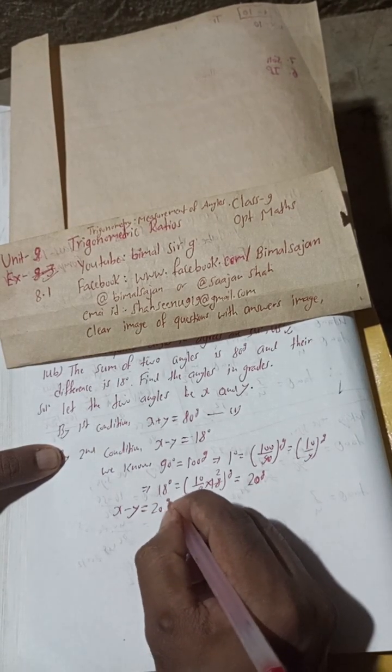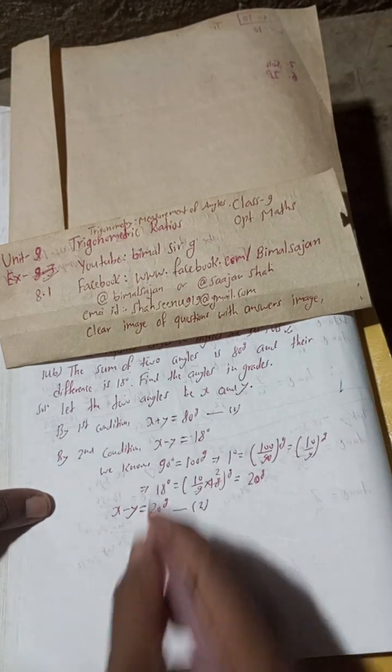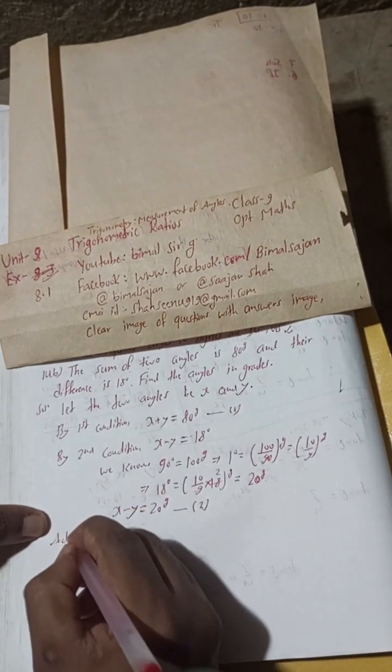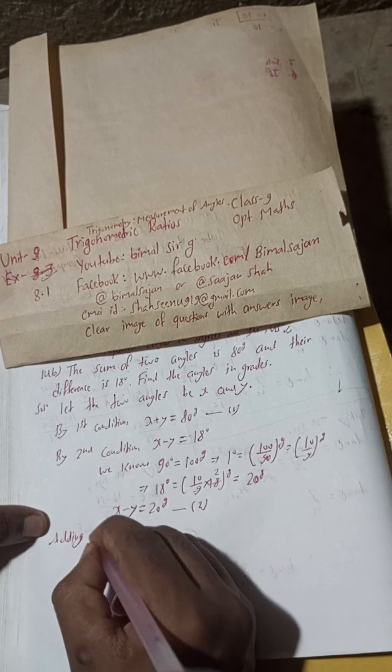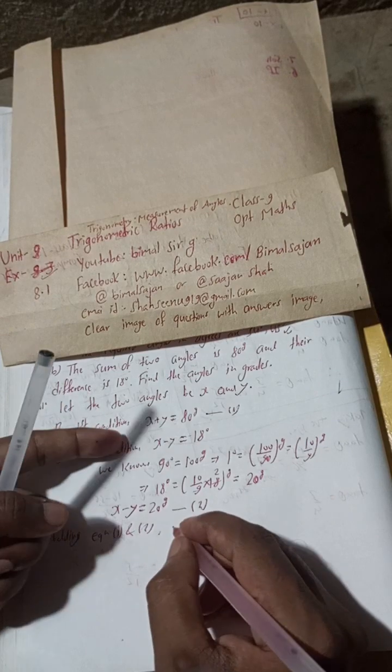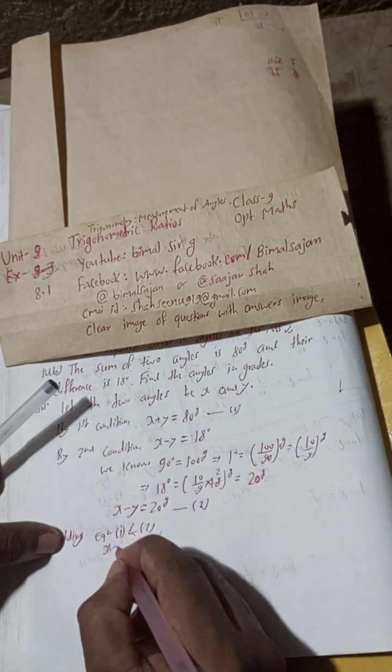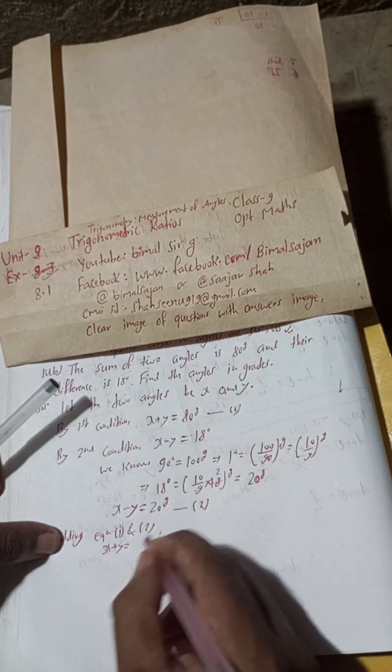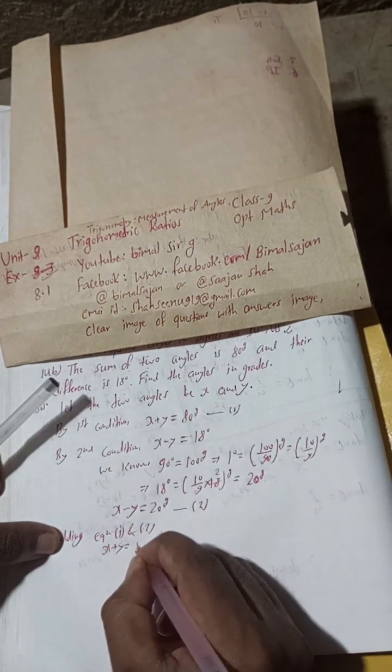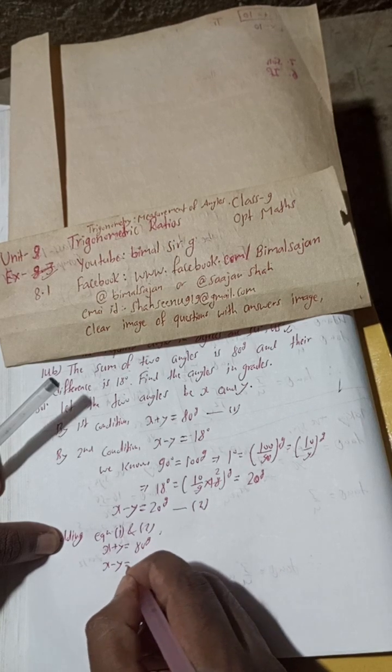Adding equation 1 and 2. Here x plus y equals 80 grade, and x minus y equals 20 grade. Y cancels, so 2x equals 80 plus 20.